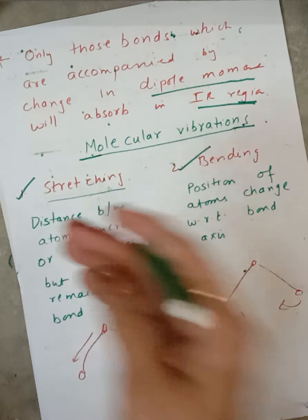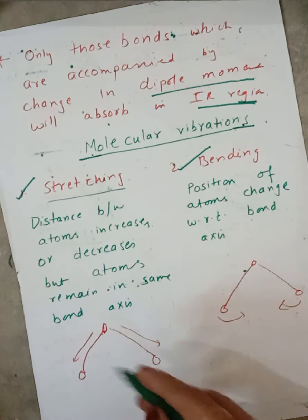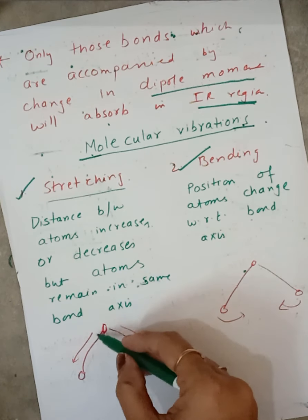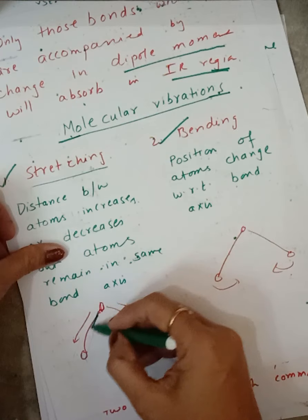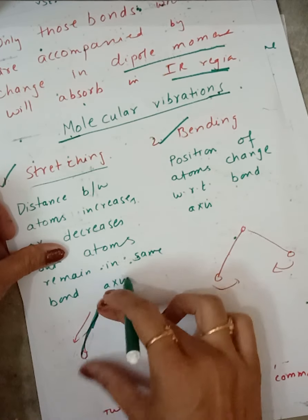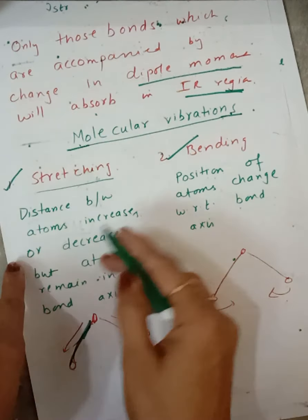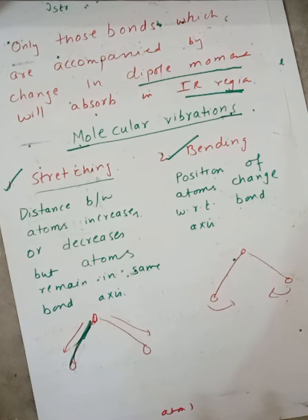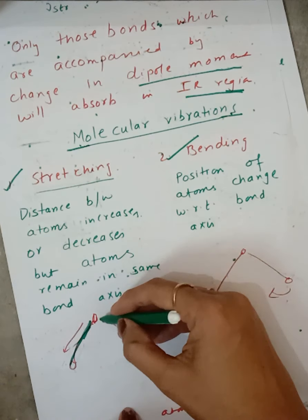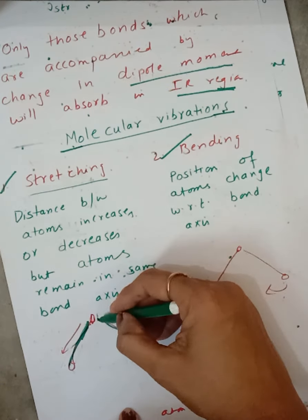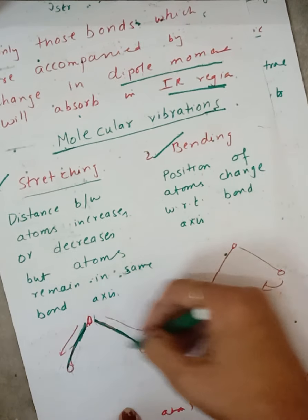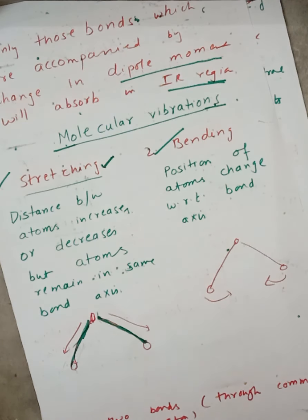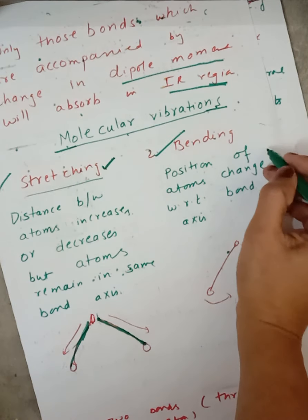What is stretching vibration? In stretching vibration, atoms do not change their bond axis — they remain on the same axis but the distance between them can increase or decrease. Distance between atoms increases or decreases but atoms remain in the same bond axis; they never leave their bond axis. Such type of vibrations are called stretching vibration.